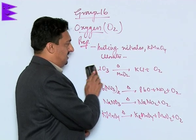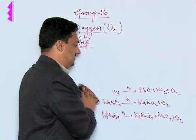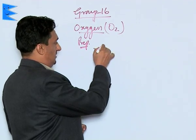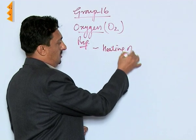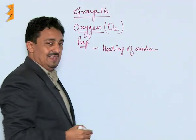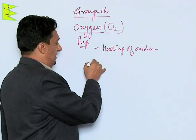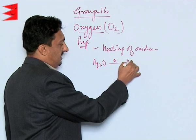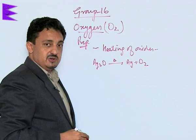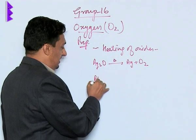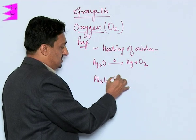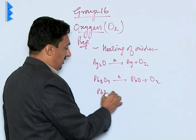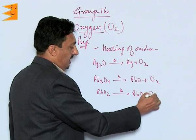Simultaneously, we can also prepare oxygen by heating oxides of many metals. Let us talk about silver oxide - when heated gives us silver plus oxygen. Similarly, lead compounds like Pb3O4 litharge on heating forms PbO and O2, and PbO2 also when heated forms PbO and O2.